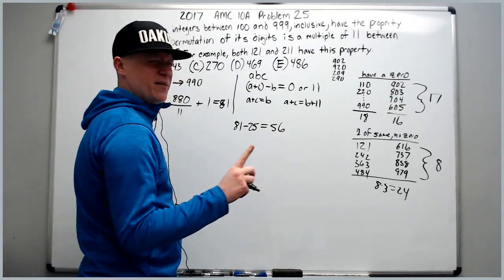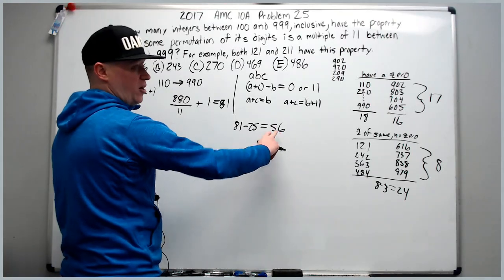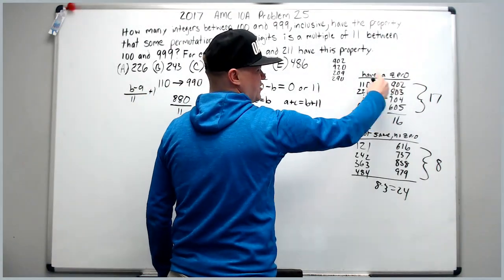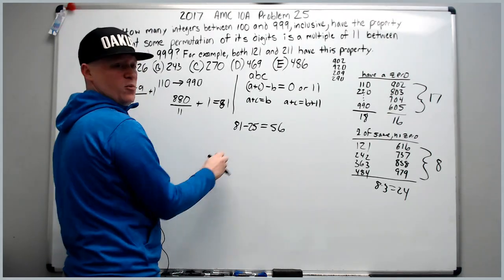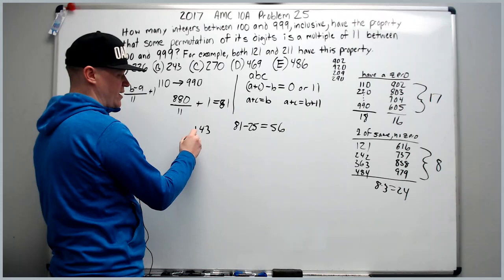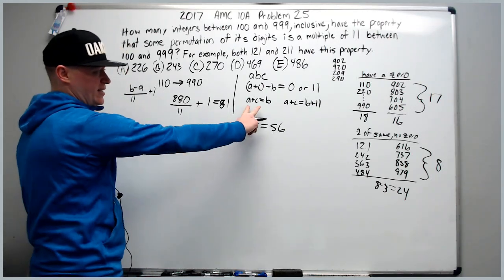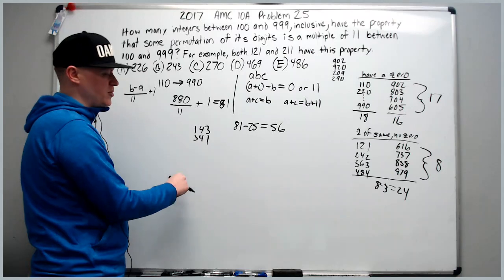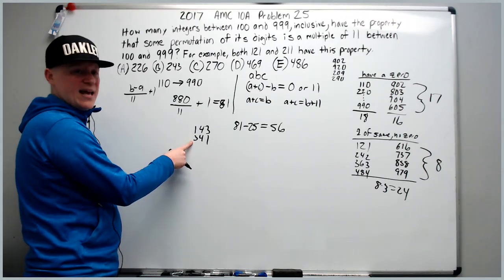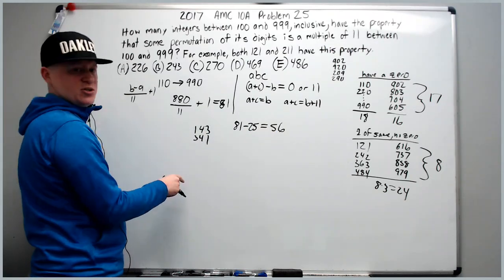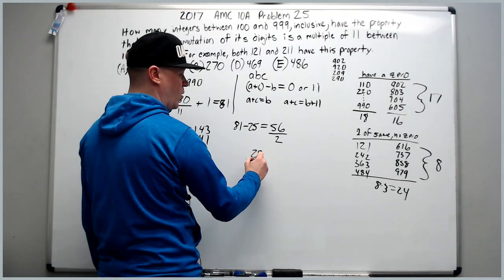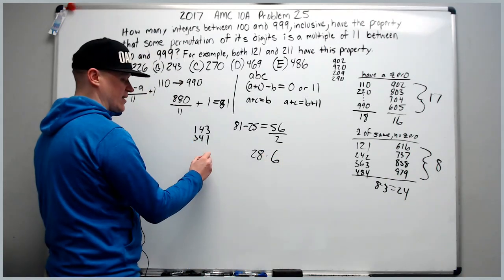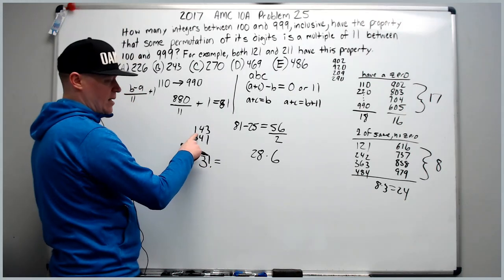Now, these 56, we want to think about this carefully, because you might think they're basically all three different digits and no zeros. They should each have six arrangements. That might be true, but don't forget what happened with the 902 and the 209. The same thing will happen to these. For instance, 143 and 341 are both multiples of 11 of this type. However, they use the exact same grouping of three digits, so I won't get unique numbers with them, so I want to get rid of one of them. And every single one of these 56 has this duplicate property. So we're going to divide them all by two to get 28 groups of three numbers that are now unique.